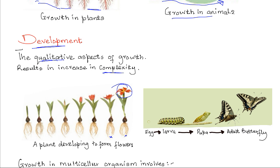In an animal such as a butterfly, the change from egg, larva, pupa, and to the adult shows the formation of new structures leading to increasing complexity — that constitutes development. Even in human beings, the development of facial hair in males, for example, and the development of secondary sexual characteristics in humans are examples of development.